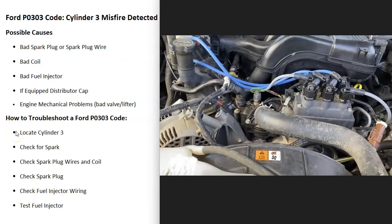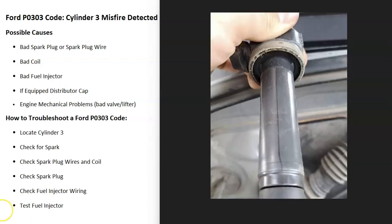Once you locate cylinder number three, there are a few ways to troubleshoot it. One of the first things to do is check the spark plug wire going to cylinder number three — be sure it's good and not having any issues. If you have coil-on-plug coils that slide in and out of the cylinders, check them out and be sure they're not damaged or cracked. Basically, look at all the components on cylinder number three and confirm they don't have any physical damage.